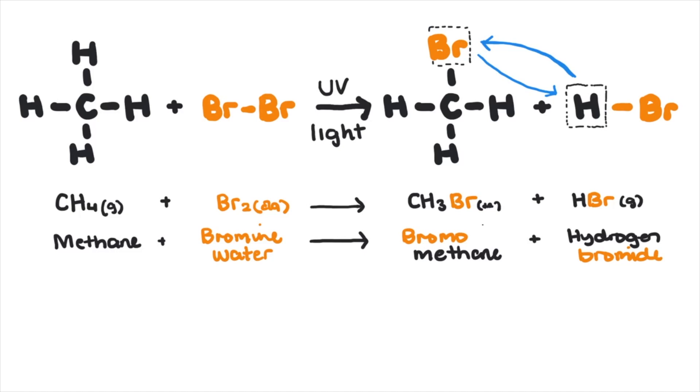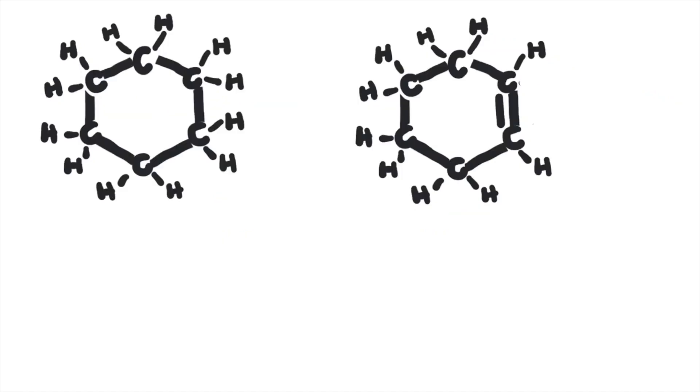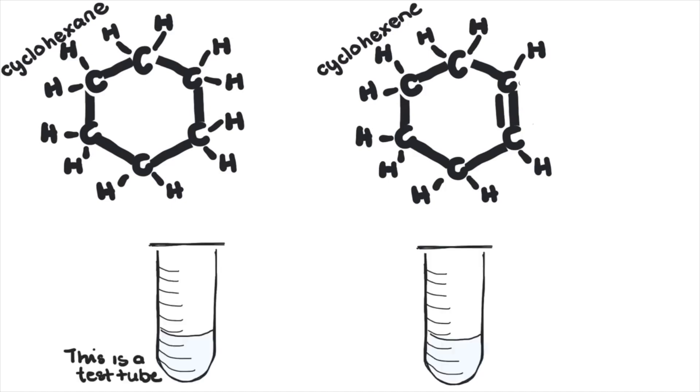In fact, one of the most common ways to distinguish between saturated and unsaturated hydrocarbons is based on this property. If you take a sample of cyclohexane and cyclohexene and place equal amounts into two separate test tubes,